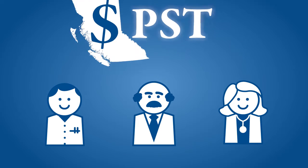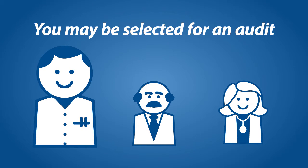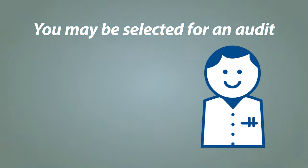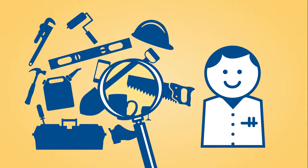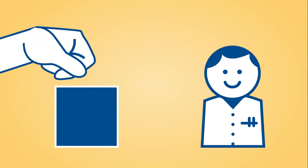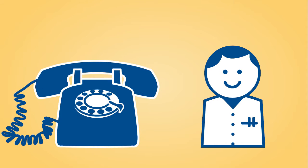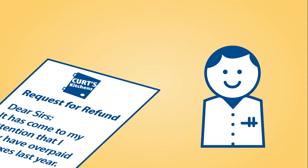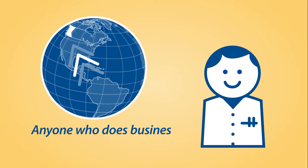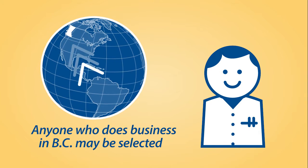Whatever your business, you may be selected for an audit. There are a number of reasons why you might be selected, including we're focusing on your particular industry or business activity, you were randomly selected, or because of information received from other sources. We could also decide to do an audit when we're processing your request for a refund of overpaid taxes. You may be selected even if your business is located outside of BC, but you do business in BC.